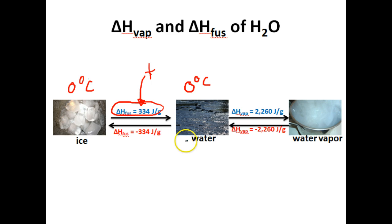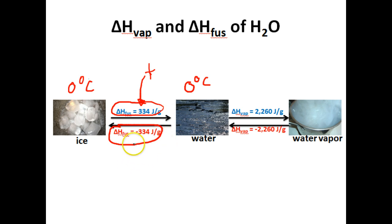Let's go the other way. If I've got some water and I want to freeze it, those water molecules must lose a certain amount of thermal energy in order to convert into ice. This water will need to release 334 joules of thermal energy to convert it back into ice. The sign of this is negative because water turning into ice is an exothermic process, and therefore the sign for the heat of fusion should be negative.